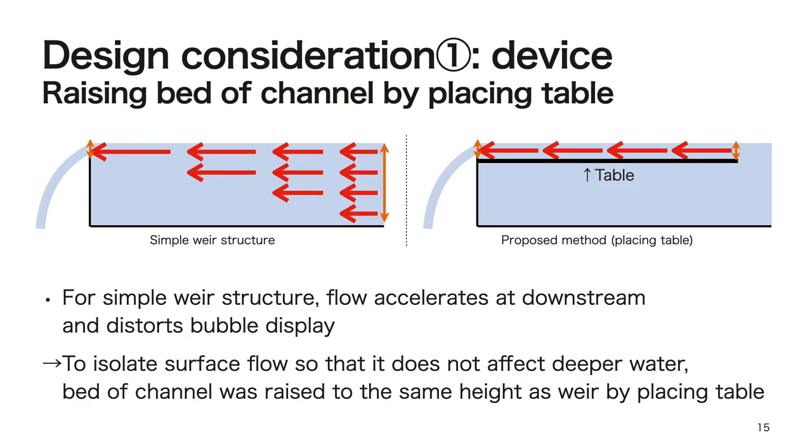First is the design of the device. We use a shallow water channel for display. For a simple weir structure, only the flow near the water surface spills over the weir, whereas the flow involves a deeper part of the water at the upstream. Consequently, the water flow accelerates as it moves downstream, resulting in a distorted bubble display. Therefore, to isolate the surface flow so that it does not affect the deeper water, the bed of the channel was raised to the same height as the weir by placing a table.